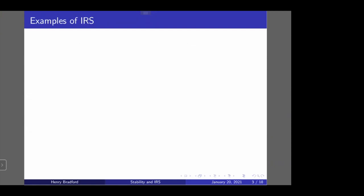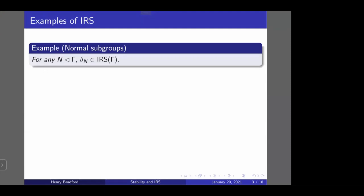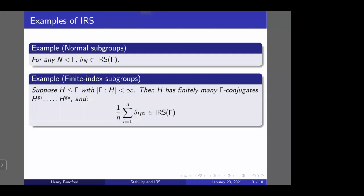Let me give some examples of invariant random subgroups. The first and easiest example: normal subgroups give you IRS. A normal subgroup is just a fixed point of the action of gamma on the space of subgroups by conjugation, so the Dirac mass at a normal subgroup is an IRS. Second, if I have any subgroup H of gamma with finite index, the conjugacy class of that subgroup is finite, so I can take the uniform measure on the finite set of conjugates of H, and that will also be an invariant random subgroup.